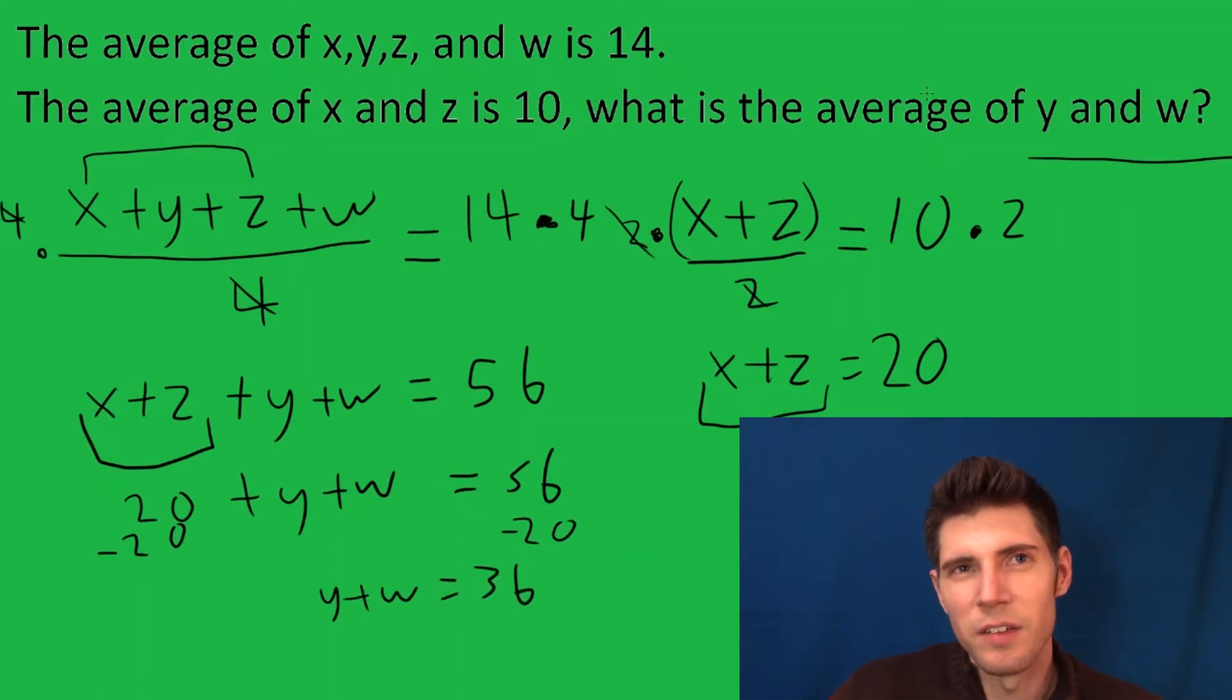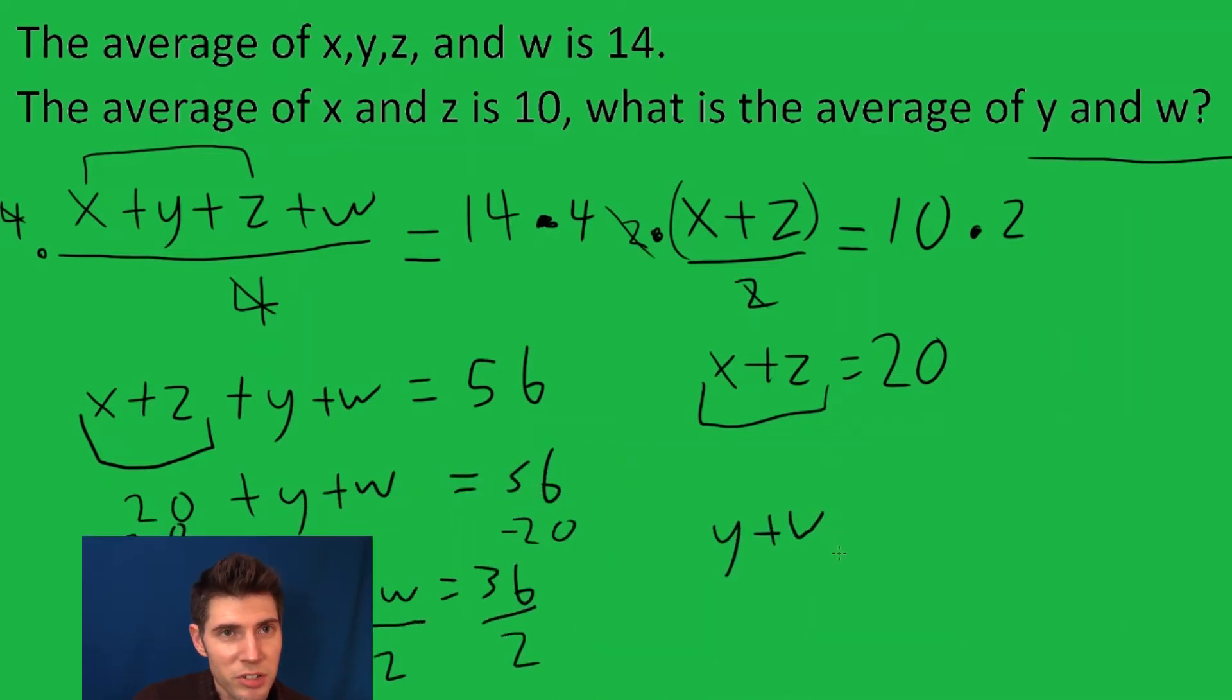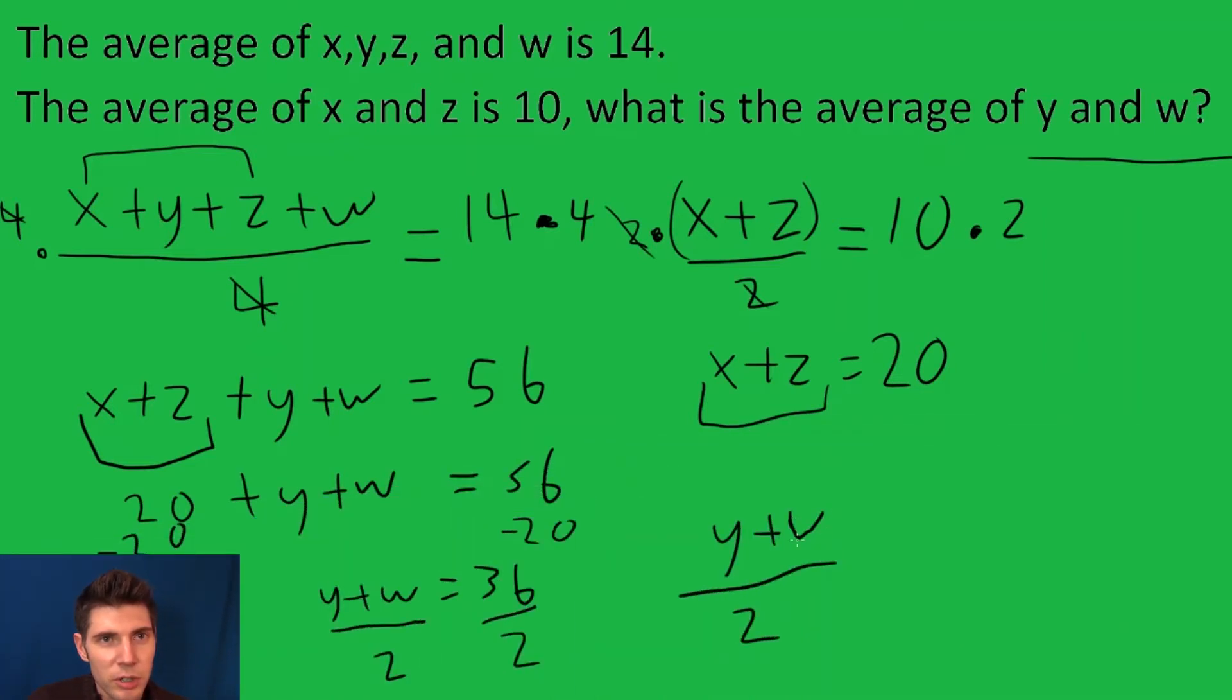Now, if this was asking for the sum of y and w, we would be done because the sum is 36. But the average means we need to divide it by 2, and whatever we do to this side we need to do to the other side. So now we have y plus w divided by 2, which is the average of y and w, equals 18 because it's 36 over 2.